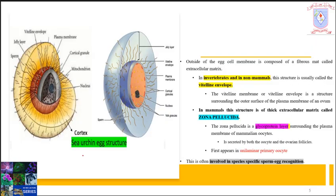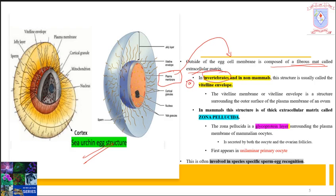Here in this slide, this is the diagrammatic representation of egg structure of sea urchin, and here you can see the plasma membrane. Outside the egg cell membrane or plasma membrane, you can see a structure which is composed of a fibrous mat called extracellular matrix. In the case of invertebrates and non-mammals, this structure is usually called the vitelline envelope.